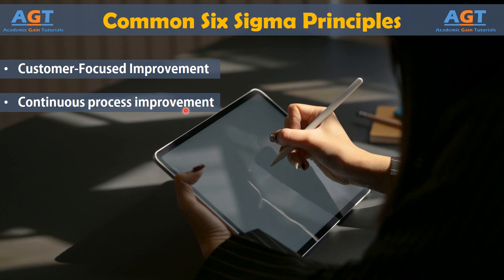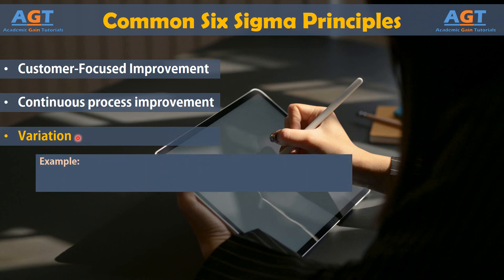Variation: One of the ways to continuously improve a process is to reduce the variation in the process. Every process contains inherent variation. In a call center with 20 employees, variation will exist in each phone call even if the calls are scripted. Inflection, accents, environmental concerns, and caller moods are just some things that lead to variation in this circumstance. By providing employees with a script or suggested comments for common scenarios, the call center reduces variation to some degree.